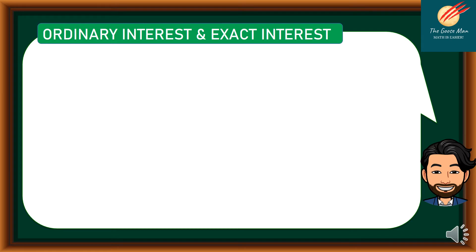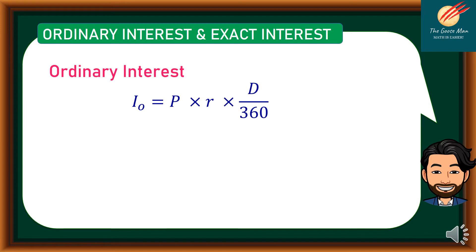When time is expressed in days, interest could either be Ordinary Interest or Exact Interest. For Ordinary Interest, 1 year is taken as 360 days — the approximate days in a year. The formula is: Ordinary Interest, I sub O, is equal to Principal times Rate times D over 360.